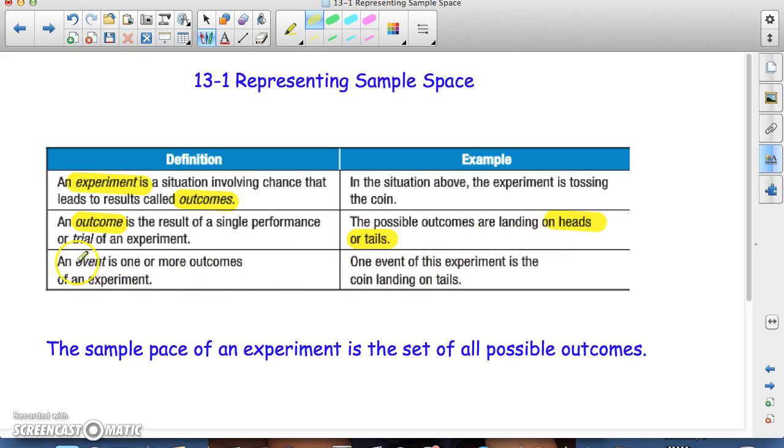The outcome then is heads or tails. That would be your outcomes. And the event is one or more outcomes of an experiment. So one event of this experiment is the coin landing on tails.